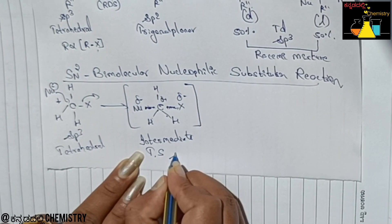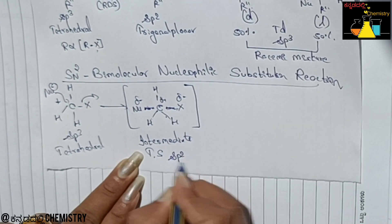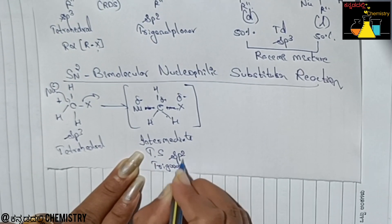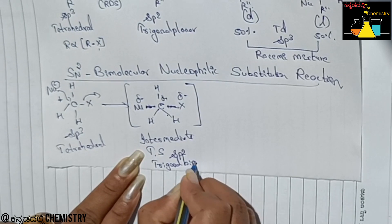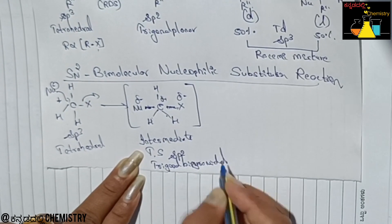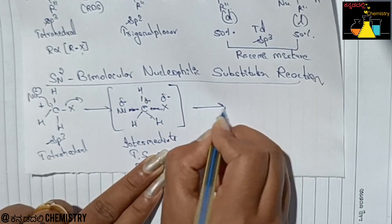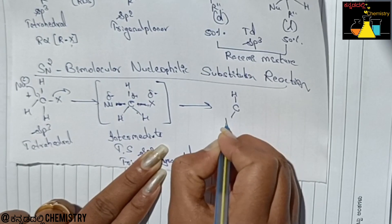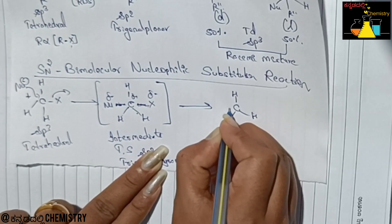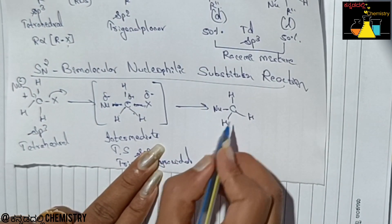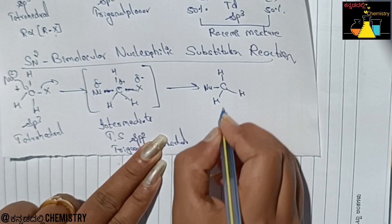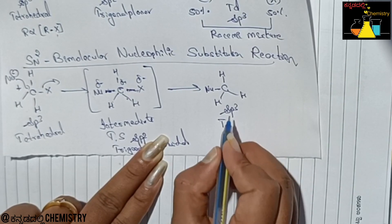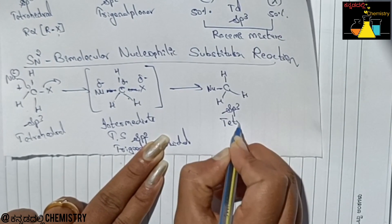The transition state has sp2 hybridization and trigonal bipyramidal geometry. The nucleophile attacks from the back side of the C–X bond. The product formed has sp3 hybridization and tetrahedral geometry.